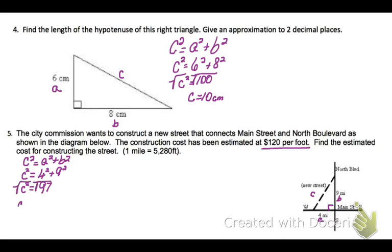Well, I don't want c squared. I want c. So, I'm going to take the square root of both sides. And I get that my new street is going to be square root of 97 miles long. Well, the reason I'm not going to turn this into a decimal right now is because I would have to round. So, I'm just going to leave it as square root of 97 and change it to feet. So, I'm going to take square root of 97 miles times the conversion factor of 5,280.